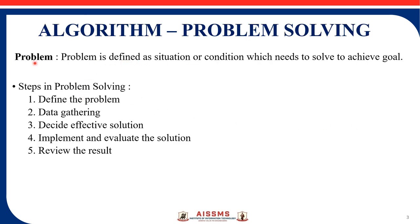For algorithm problem solving: a problem is defined as a situation or condition which needs to be solved to achieve a goal. For a particular problem, we design an algorithm to solve it and achieve that goal. The steps are: first, define the problem — write the problem statement; second, data gathering — gather data according to that problem statement; third, decide an effective solution.